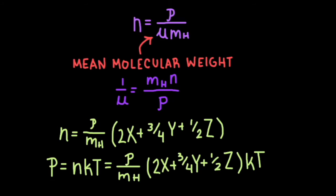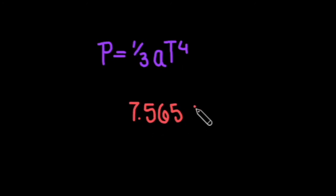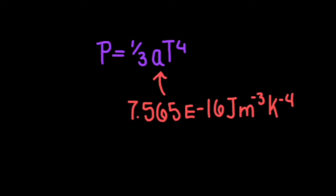Another form of pressure is radiation pressure, which is defined by 1 third a times t to the fourth power, where a is the radiation constant equal to 7.565 e to the negative 16th joules per meters cubed per Kelvin to the fourth power.